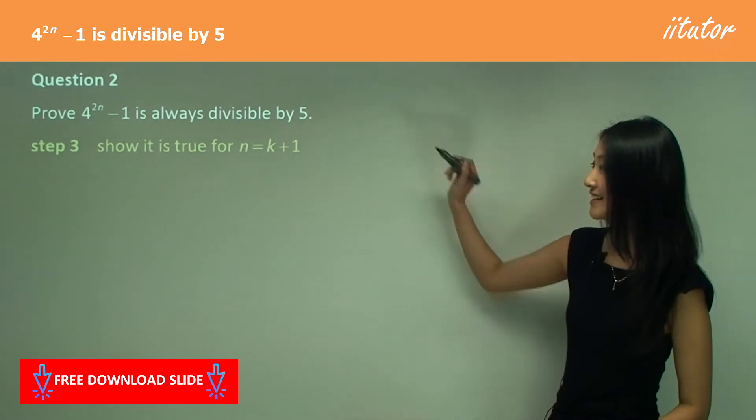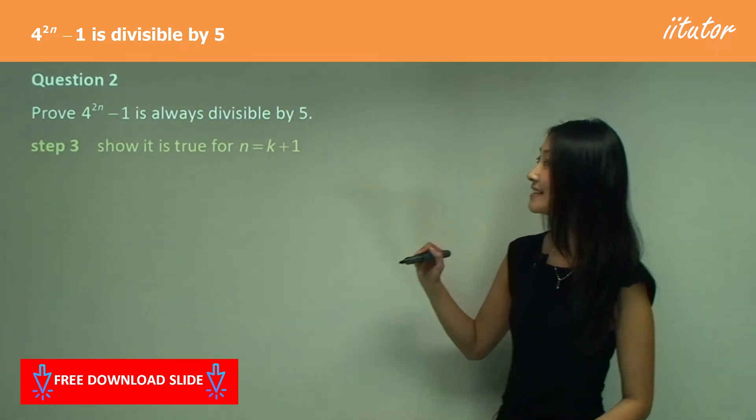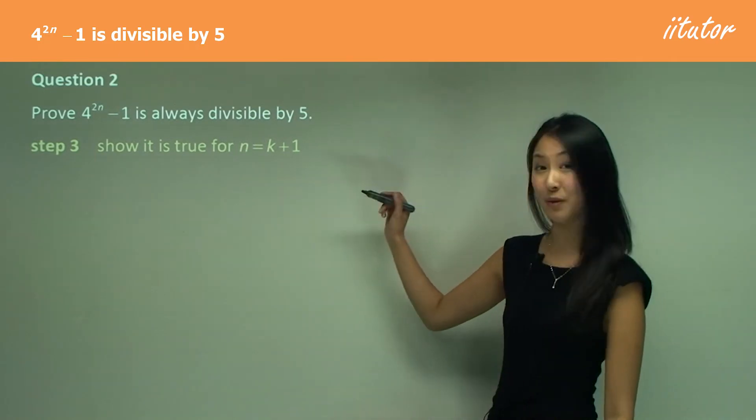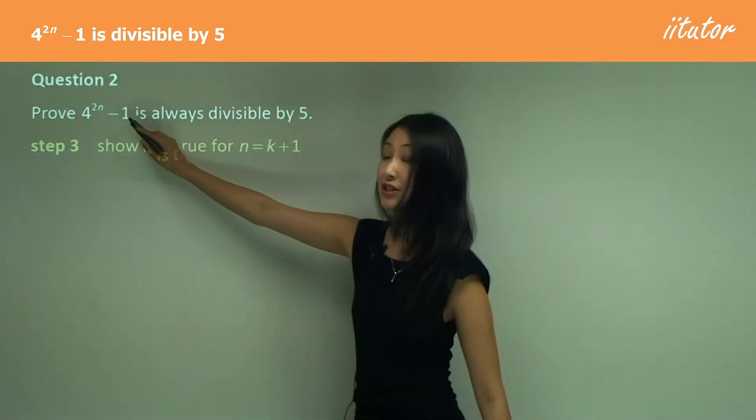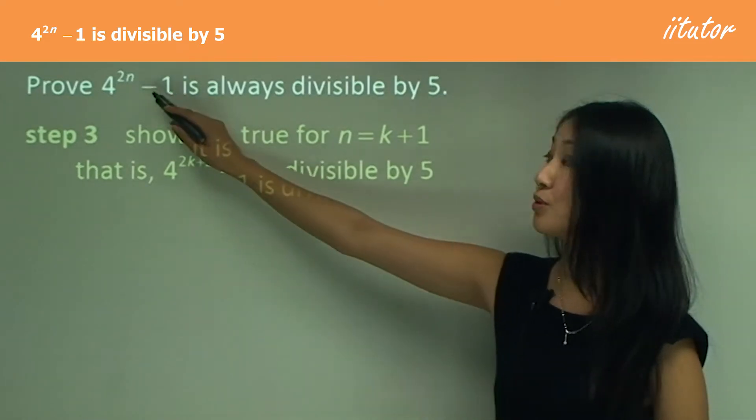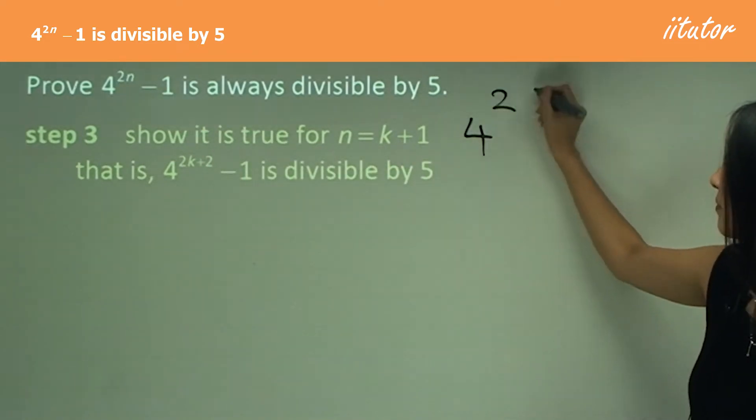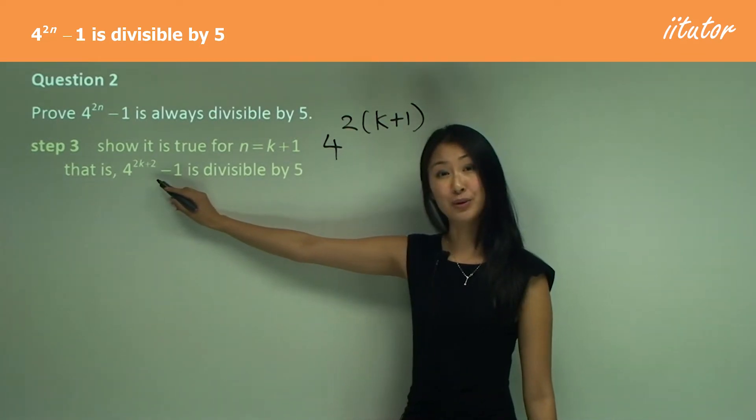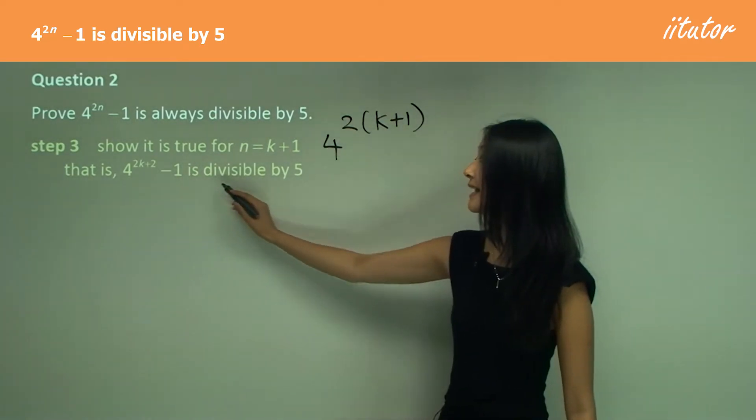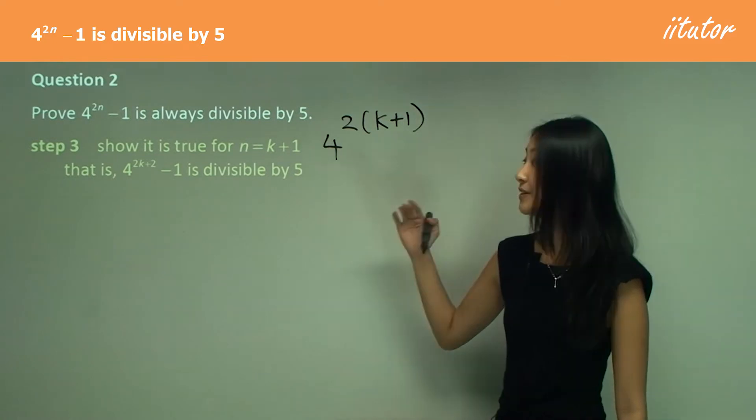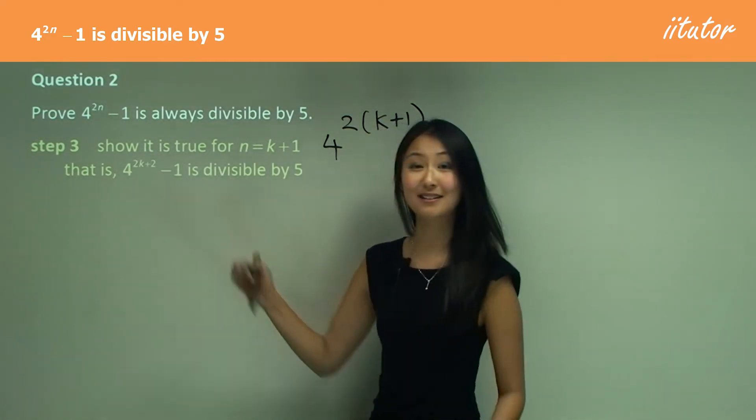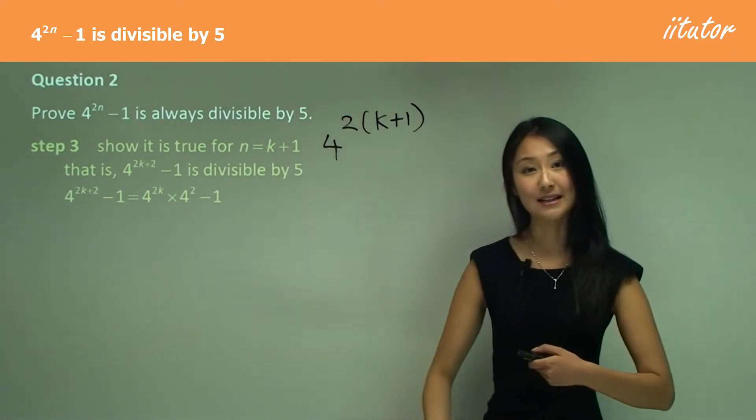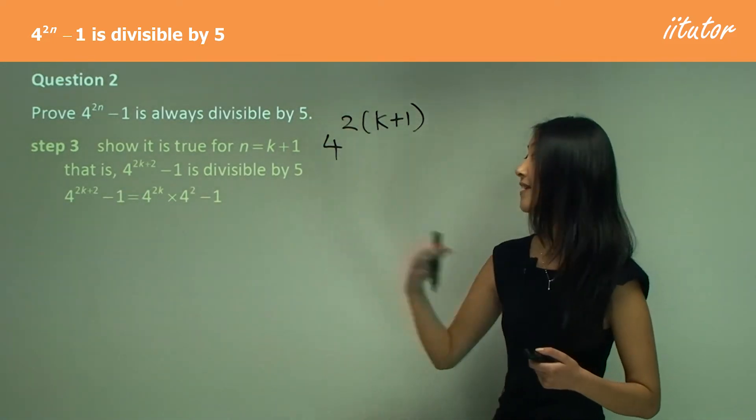Now we can move on to step 3, which is to show that it's true for n equals k plus 1. So we substitute k plus 1 into this: 4 to the power of 2 times (k plus 1), and that's why we get 4 to the power of 2k plus 2 minus 1 is divisible by 5. Remember, we start off with this because there's no left-hand side to start off with, and what we need to do is manipulate it to be able to factorize 5 at the front.